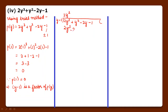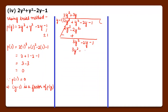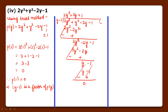Dividing 2y cube plus y square minus 2y minus 1 by y minus 1: 2y cube divided by y = 2y square. Multiply: 2y cube minus 2y square. Sign changed, cancelled. y square plus 2y square = 3y square minus 2y minus 1. 3y square divided by y = 3y. Multiply: 3y square minus 3y. Sign changed, cancelled. plus 3y minus 2y = y minus 1. y divided by y = 1. Multiply: y minus 1. Sign changed, cut. Remainder 0. We have got our quadratic polynomial 2y square plus 3y plus 1.